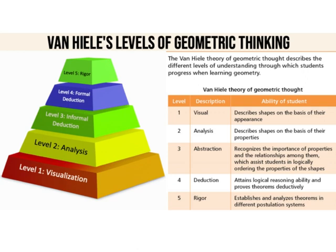The third stage is called abstraction or informal deduction. This is where learners are able to recognize the importance of properties and the relationships among them. The fourth level is called formal deduction, where learners attain logical reasoning ability and are even able to prove theorems deductively.